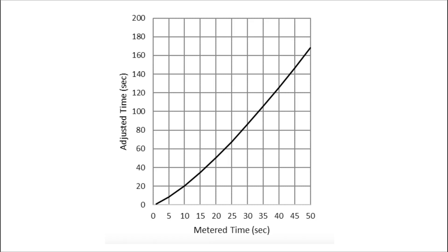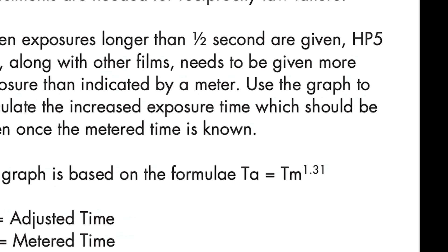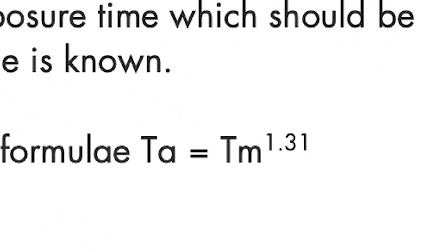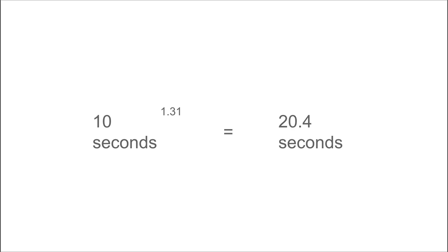Shutter speeds up to half a second don't require any change. However, a 10 second exposure needs to be doubled to 20 seconds. Exposure for Ilford HP5 increases exponentially according to this formula: metered exposure raised to the power of 1.31 equals required exposure. So 10 seconds raised to the power of 1.31 equals 20.4 seconds. That maths lesson will come in useful later.